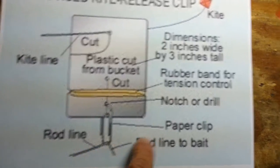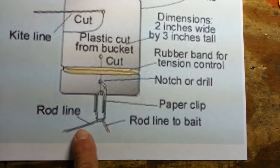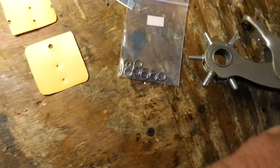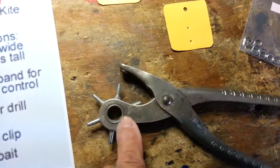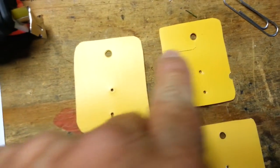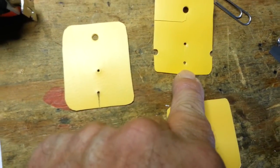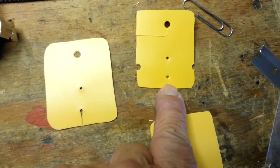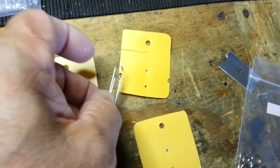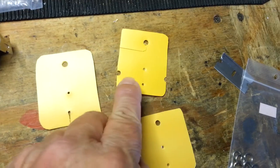What I did was I took a pair of hole punchers. I made a big hole for the kite line and then smaller holes for the paper clip. You're going to put a paper clip in there, and then these notches - you can use a rubber band.